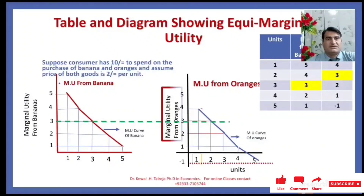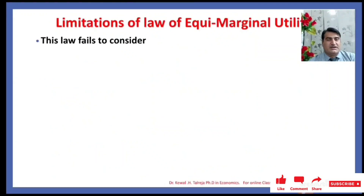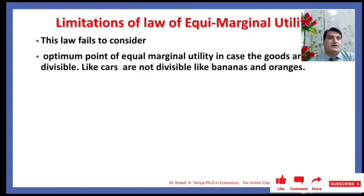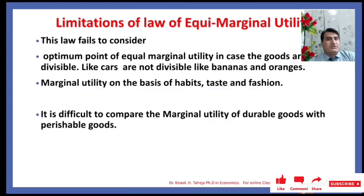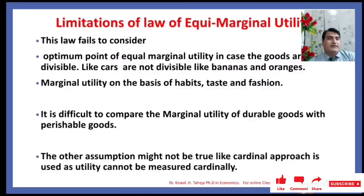What are the limitations of the Law of Equimarginal Utility? This law fails to consider the optimum point of equal marginal utility when goods are not divisible — for example, goods like a car cannot be divided like bananas or oranges. This law also fails to consider the equal marginal utility for indivisible goods. It does not consider marginal utility based on habit, taste, and fashion, and it is difficult to compare the marginal utility of durable goods with perishable goods.